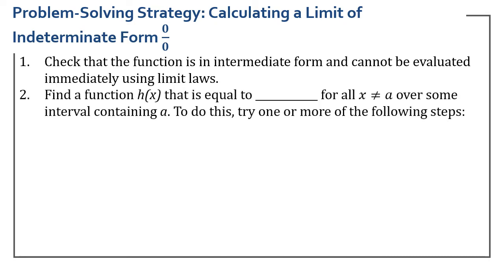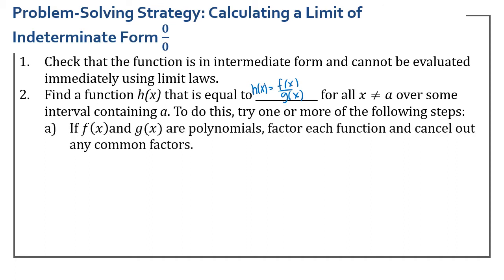So what you're going to do is find a function h of x that is equal to f of x over g of x for all x not including a, over some interval containing a. To do this, we're going to try one of the following steps. What we did on the last slide is we took f of x and g of x as polynomials, factored each function, and cancelled out any common factors, which got it to where we can actually apply the limit laws to evaluate it.